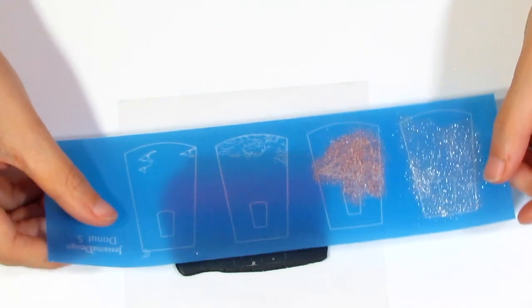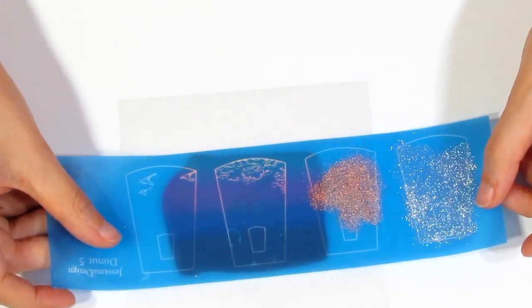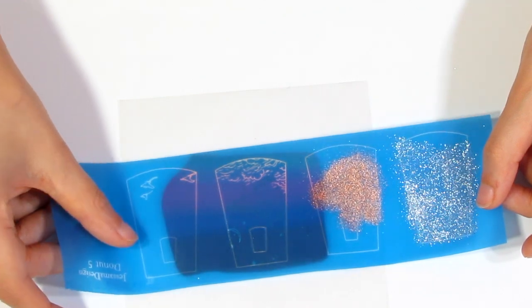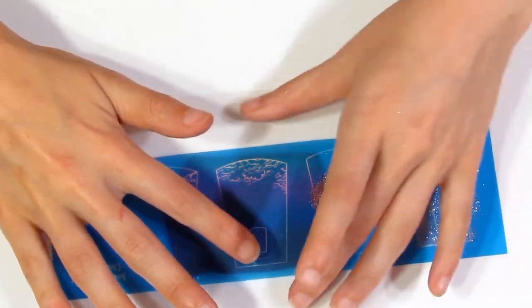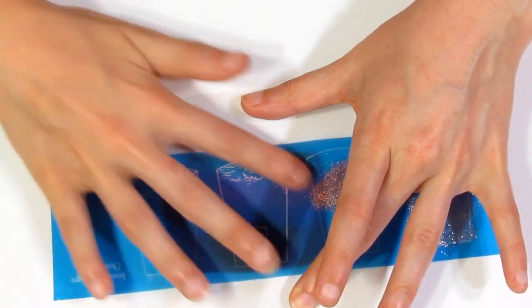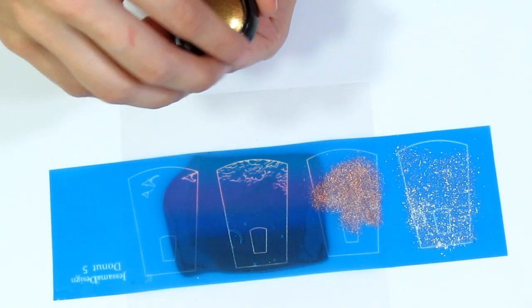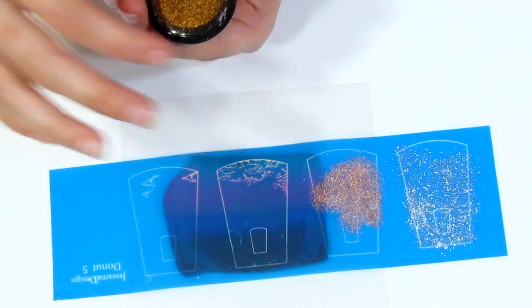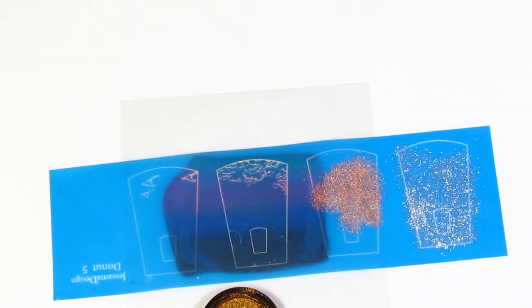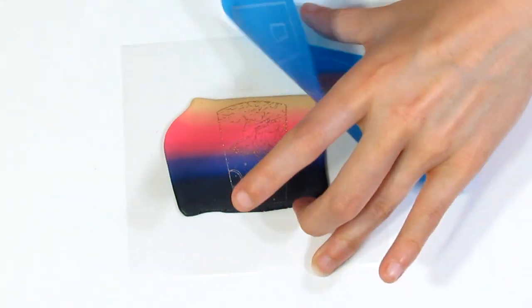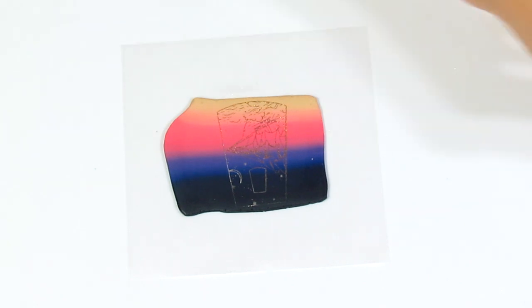Then we'll line up the screen again. Now depending on the silkscreen design that you are using you would use a different color Skinner Blend. Obviously with this one I'm kind of going for a sunset effect. So depending on the screen you might want to change up the colors that you're using whether that be the mica powder or clay or both. So for the clouds I'm going to go with gold. And there we go.